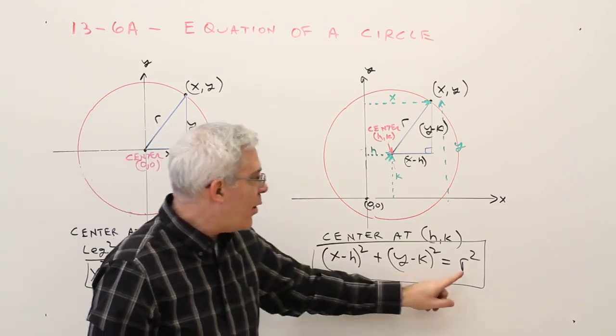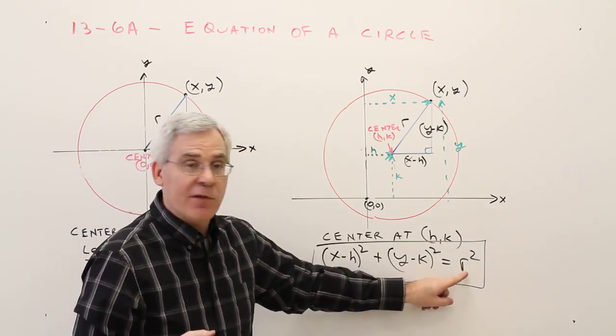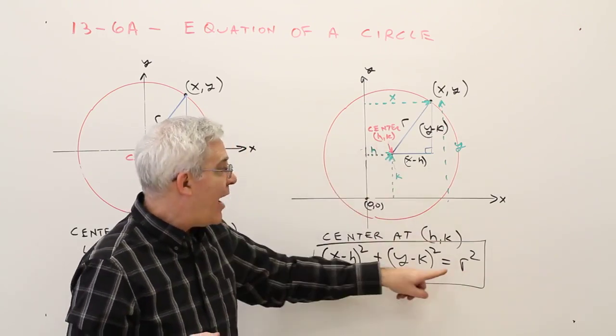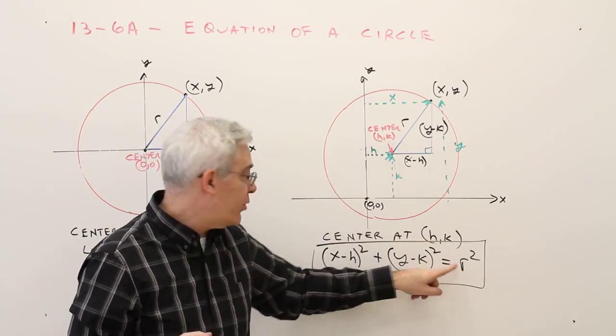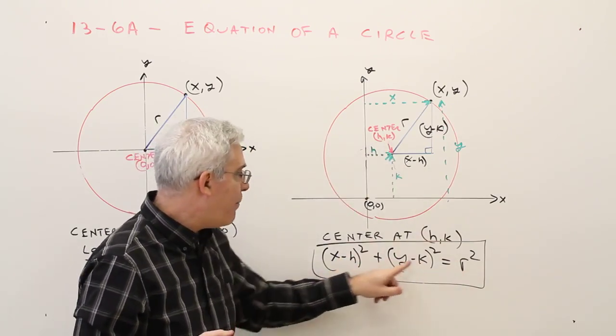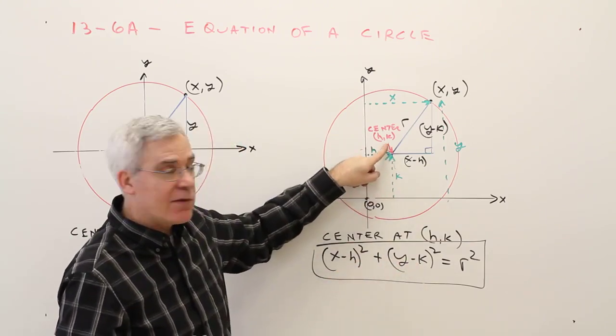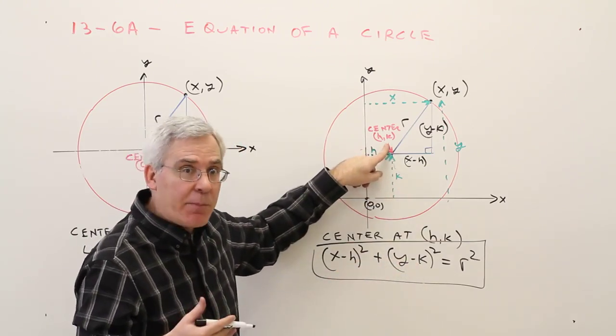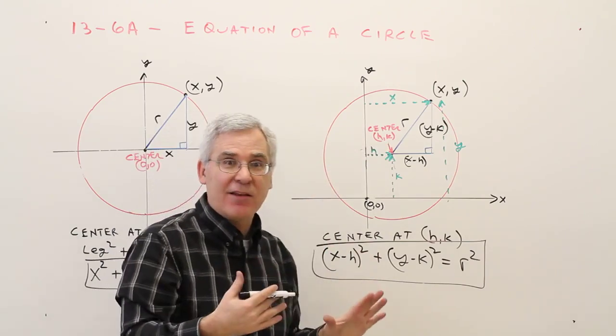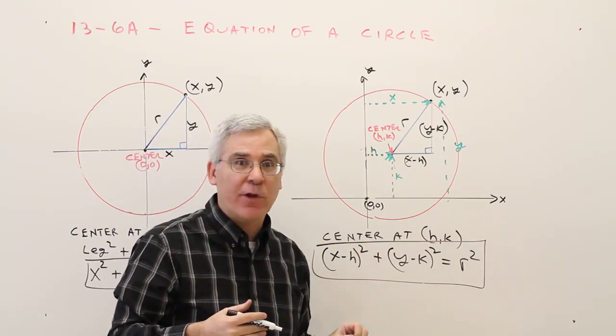It's important to note that this is an r squared, and the radius would be that square root. Also notice that I've got minus h and minus k, whereas the center is positive h comma positive k, so we've got that sign difference going on.